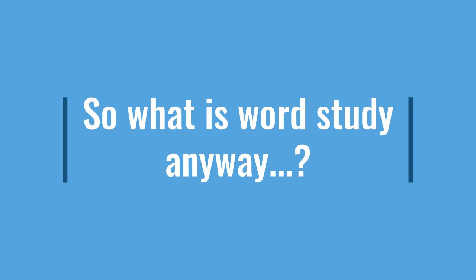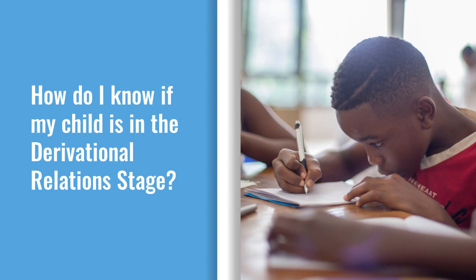By observing how a student reads, writes, and spells, we can categorize their abilities into different stages. In this video, we are specifically diving into the derivational relations stage. This stage describes the abilities of more advanced readers and writers, typically upper elementary, middle school, and high school students. This is also the final stage of word study.